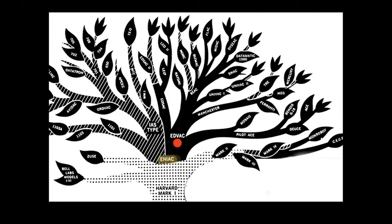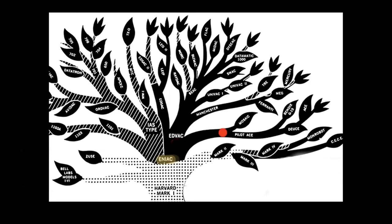First, the step from ENIAC to EDVAC; also the step to the IAS computer at the Princeton Institute for Advanced Study; on the other side of the Atlantic, Alan Turing's Automatic Computing Engine (ACE); and the Manchester computer. I'll also mention the SEAC computer built in Washington DC, the British EDSAC computer, and the great German pioneer Konrad Zuse, whose computers are most implausibly depicted as branching off from Howard Aiken's Harvard Mark I computer. I'll be mentioning these more briefly than they deserve, but it's a very big tree to explore in the time.